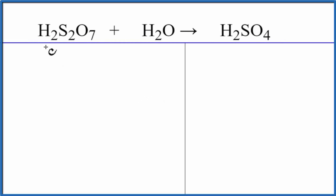In this video, we'll balance the equation H2S2O7 plus H2O gives us H2SO4, sulfuric acid. This is known as pyrosulfuric, or oleum is another name.